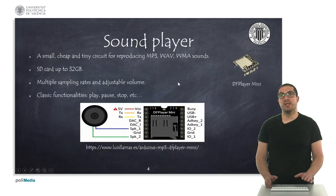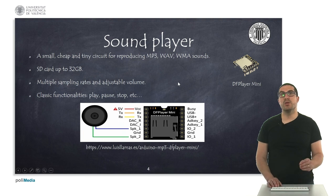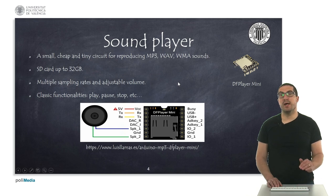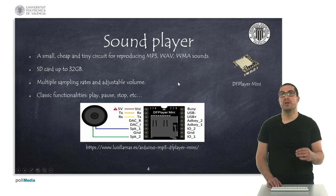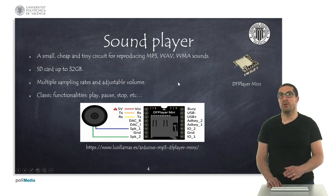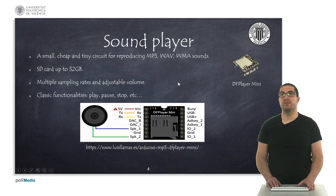As an alternative we have a sound player, the DF Player Mini. It's a very cheap and tiny circuit we can use for reproducing MP3 and WAV files. It includes an SD card reader where we can store sound files, and with our microcontroller we simply control which files we would like to reproduce — play, stop, pause, and so on. It's a very interesting option if you want to generate music or specific voice commands.